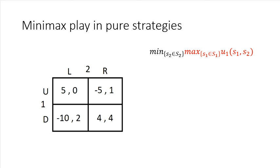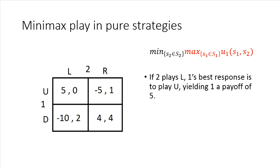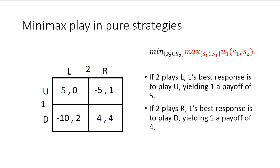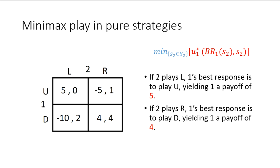We apply the definition of Minimax in pure strategies by first considering the inside optimization problem. That is the problem that player one would solve to generate his best response function. If player two plays L, player one's best response is to play U, because if two plays L she's inducing either a five or negative ten — player one plays U and gets five instead of negative ten. On the other hand, if player two is playing R, they're inducing either a payoff of negative five or four for player one. Obviously four is utility-maximizing in that situation, implying that player one's best response to R is to play D. That is the solution to the inside optimization problem.